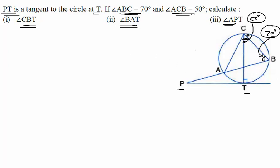For angle CBT, let us join B and T first. If you look at this question very carefully, you will see that this angle is already marked as 90 degrees. We see a chord TC, where T is the point of contact of the tangent PT, which means TC should become the diameter — because only one chord is perpendicular to the tangent at the point of contact, and that is the diameter.